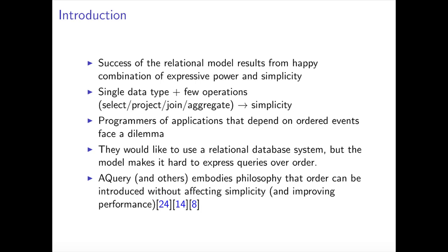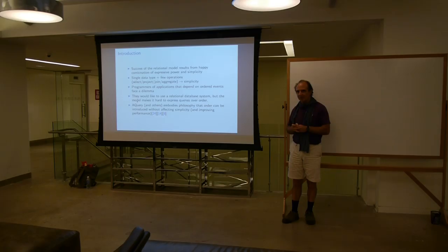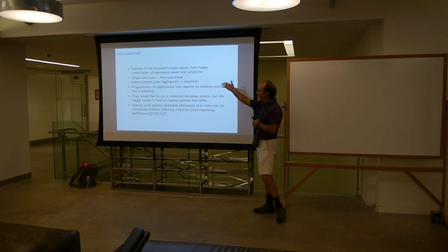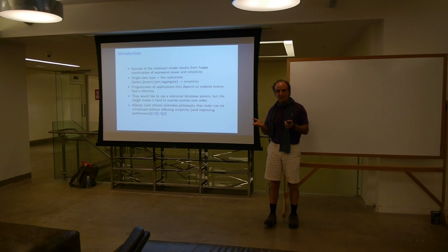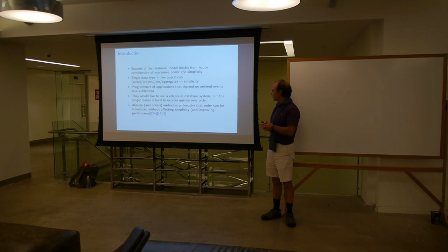So, a query language for order. I know some people here don't like the relational model, but it's been successful — we've got to admit it's been successful. And it's been successful because it has good expressive power and simplicity. One of the reasons it has simplicity is that there's a single data type, which is just a table, and then there are operations on those tables. So when you have a nice closed set of operations like that, things are good.